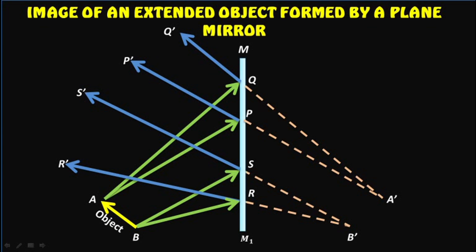Thus A'B' is the virtual image of the object AB. It is erect and of size equal to that of the object. The normal distance of each point of the image behind the mirror is same as the normal distance of the corresponding object point in front of the mirror. That is, BN is equal to B'N.